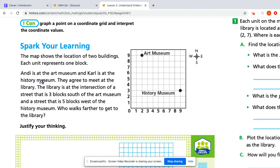It says that they have to meet at the library. The library is at the intersection. The word intersection means where two things meet, where they cross. So the first clue of where the library is, is that the street that it's on is three blocks south of the art museum.